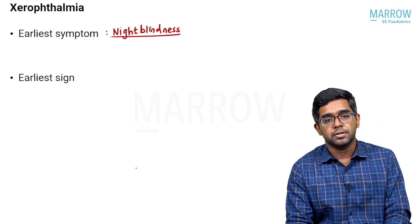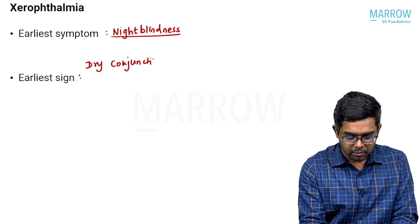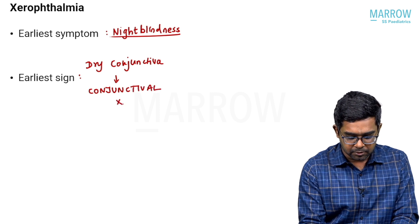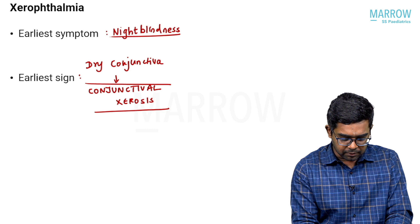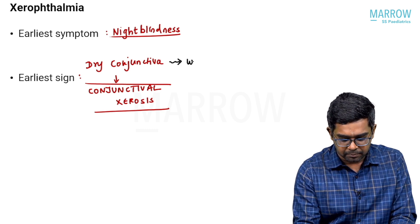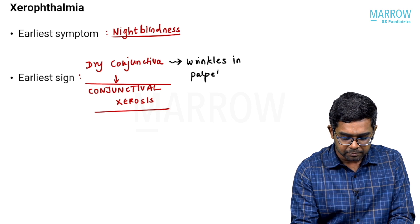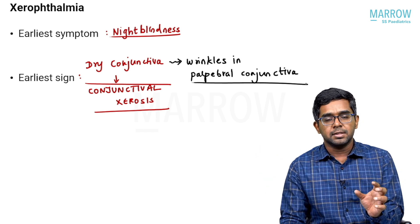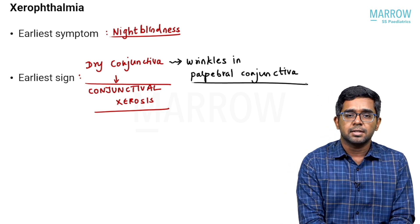The earliest sign of xerophthalmia is drying of the conjunctiva — dry conjunctiva — what we call conjunctival xerosis. Whenever there is dryness of the conjunctiva there will also be wrinkles in the conjunctiva, and the usual area where you will see wrinkles is the palpebral conjunctiva. This is very obvious when you ask the patient to move the eyes to one side.